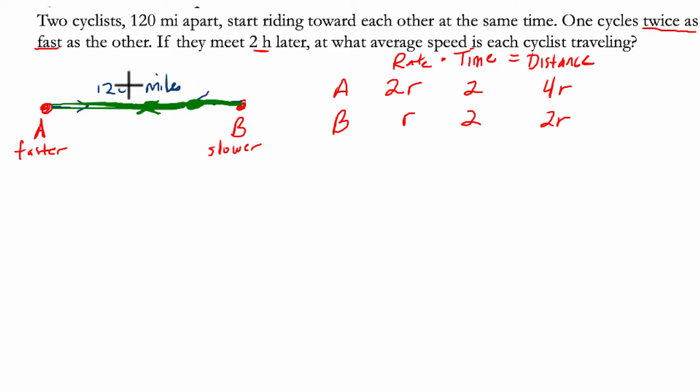Now, it happens in this case that one cycles twice as fast as the other. So that's convenient because then we can think of, A will have traveled double the distance of B. So if we cut this in thirds, we can see that B has gone a third of the distance and A has gone two thirds.